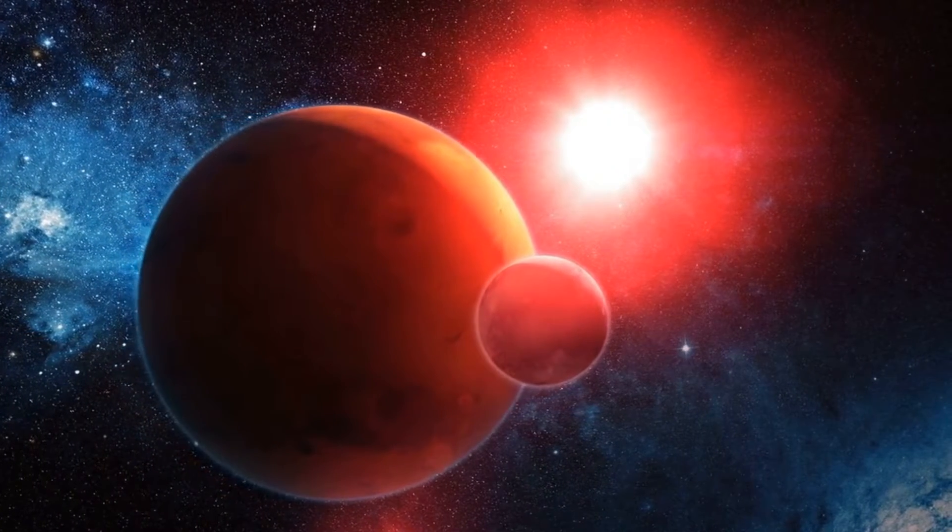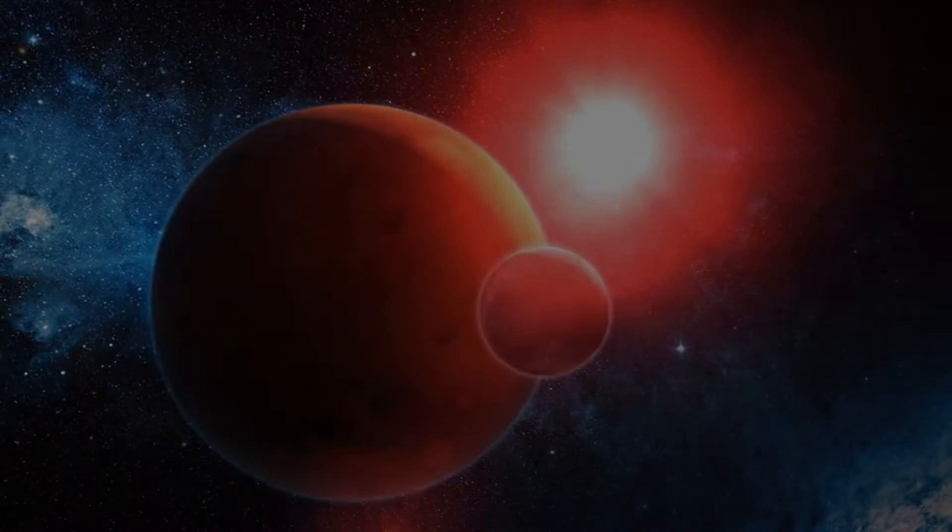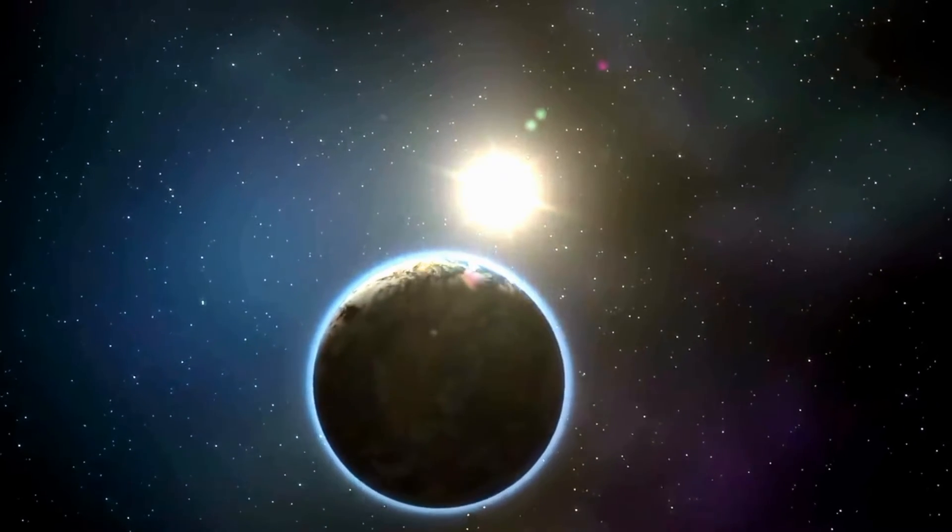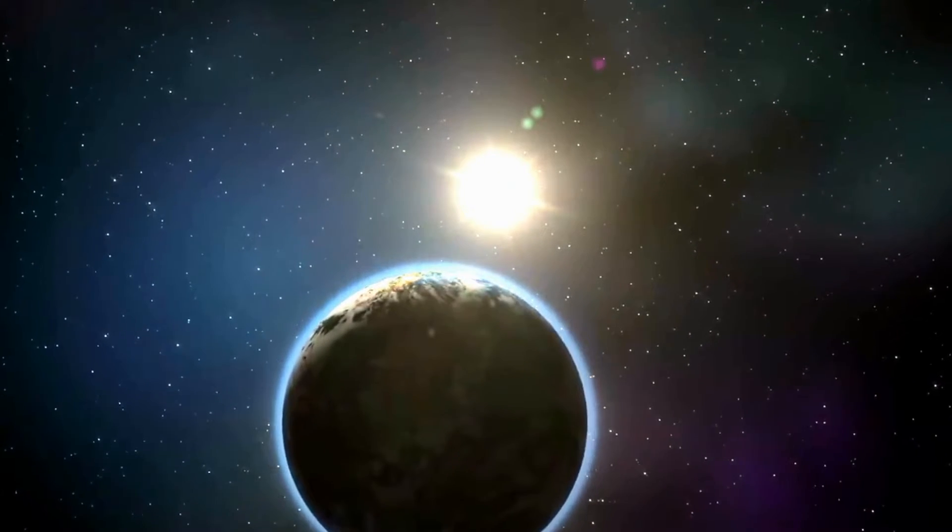The critical factor enabling daytime lunar visibility is Earth's atmosphere. Unlike the vacuum of space, our planet's atmosphere scatters sunlight in various directions.